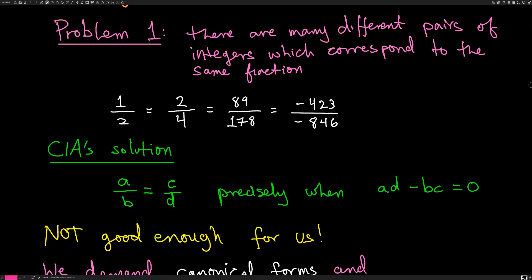The standard solution is: A divided by B equals C divided by D precisely when A times D minus B times C equals zero. You can just rearrange the equation — multiply both sides by D, then by B, do a subtraction, and you get AD minus BC equals zero.